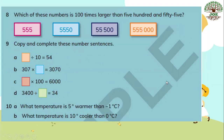Number eight: which of these numbers is 100 times larger than 555? 555 times 100 means we multiply by 100, so our number becomes 55,500. Number nine, copy and complete these number sentences. Part A: something divided by 10 equals 54 — we multiply to get the starting number, which is 540. Part B: 307 multiplied by something equals 3,070 — there is one extra zero, so we multiply by 10.